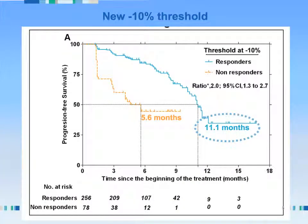We've published a paper about using a minus 10% threshold to differentiate patients who benefited from these treatments. This was a very effective threshold: the responder patients had an 11-month PFS, whereas the non-responders had a 5-month PFS. Since then, several publications on independent populations have shown that this threshold does really reflect differences in PFS.